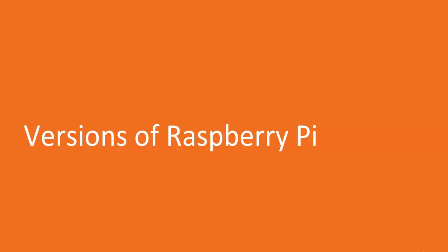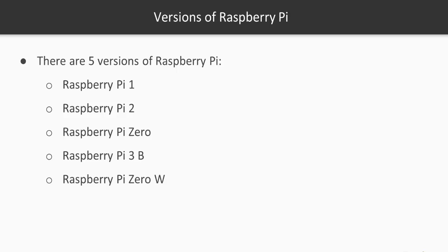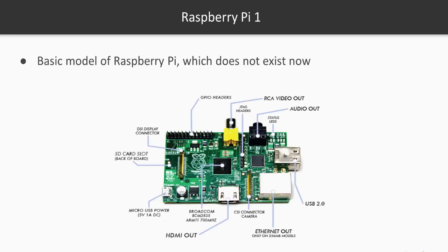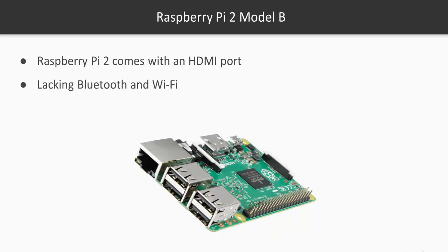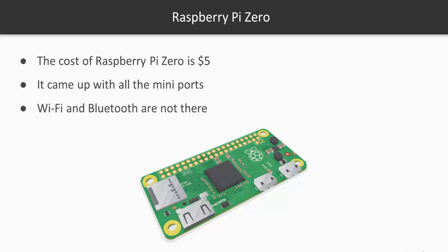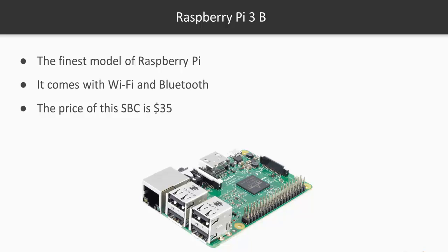In this video, we will talk about versions of Raspberry Pi. A lot of people get confused about which version they should buy. There are five versions of Raspberry Pi. The first was Raspberry Pi 1, the basic model, which does not exist nowadays. The second was Raspberry Pi 2, which had an HDMI port but no Bluetooth or Wi-Fi. Then Raspberry Pi 0 came into the market at just $5, but it had mini ports and again no Wi-Fi or Bluetooth. Then Raspberry Pi 3 came, which is the finest model and comes with Wi-Fi and Bluetooth, priced at $35.